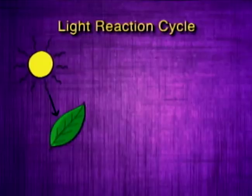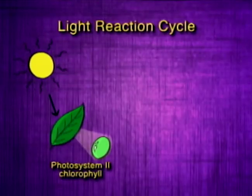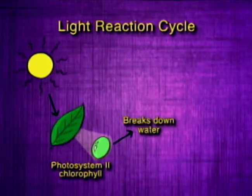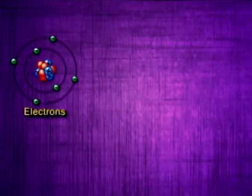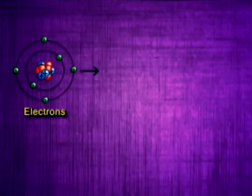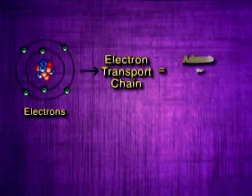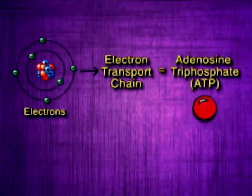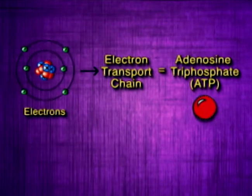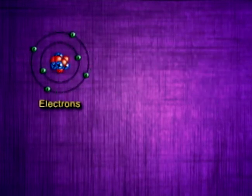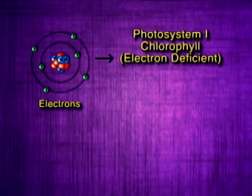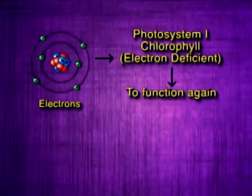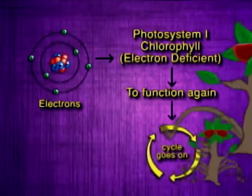Photosystem-2 chlorophyll replenishes these electrons by the following process. When a photosystem-2 chlorophyll absorbs light, it breaks down water to oxygen, hydrogen ions, and electrons. These electrons are passed through an electron transport chain to make adenosine triphosphate, or ATP, another high-energy molecule. Finally, these electrons are passed on to the electron-deficient photosystem-1 chlorophyll to enable it to function again, and the cycle goes on.